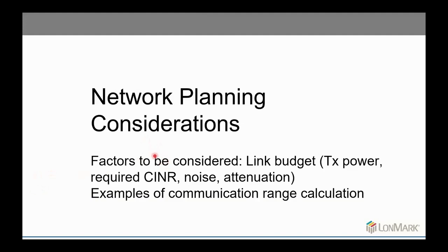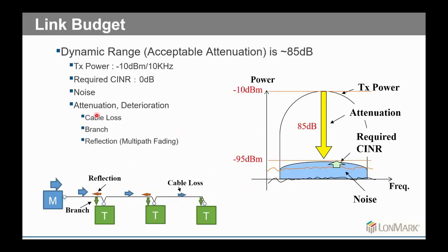Now I'm going to present basic and simple factors and the theory for network design. First, this is a link budget — a budget between transmitter and receiver for communication. It calculates the factors of signal gain and loss. If the gain and loss reach the required level, then communication is possible. The TX power, required CNR, noise, attenuation, and deterioration are the factors used to calculate the gain and the loss.